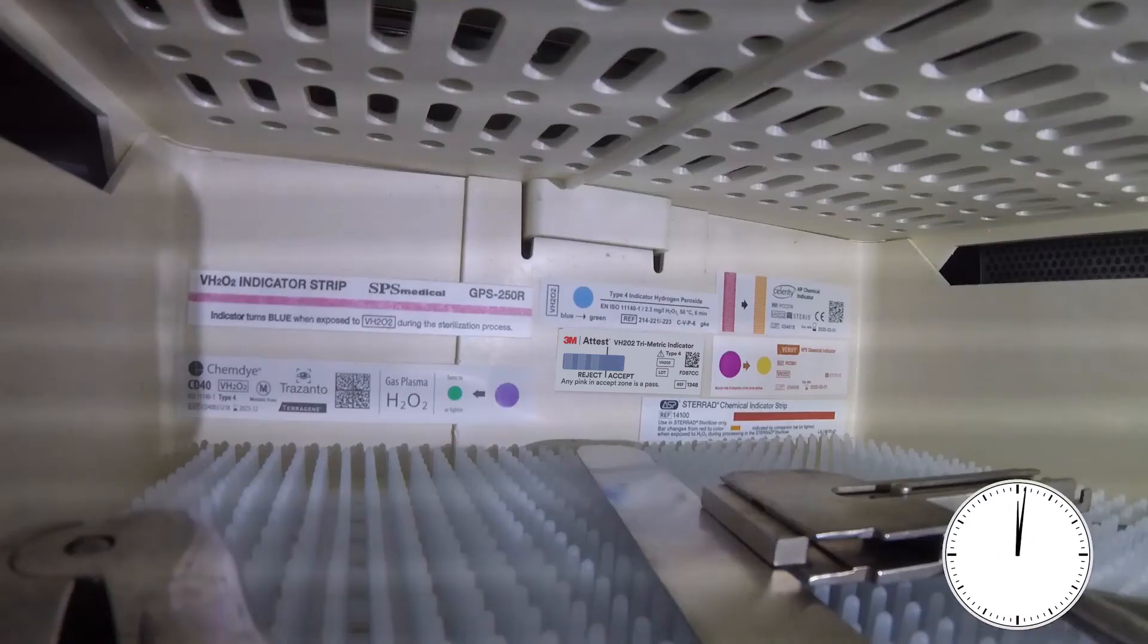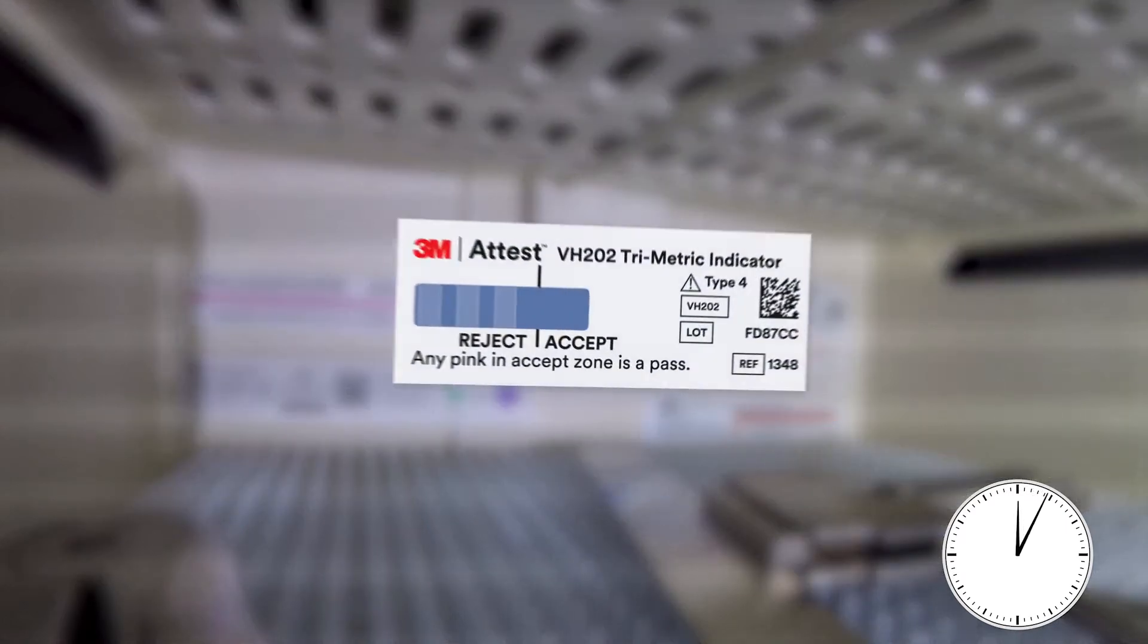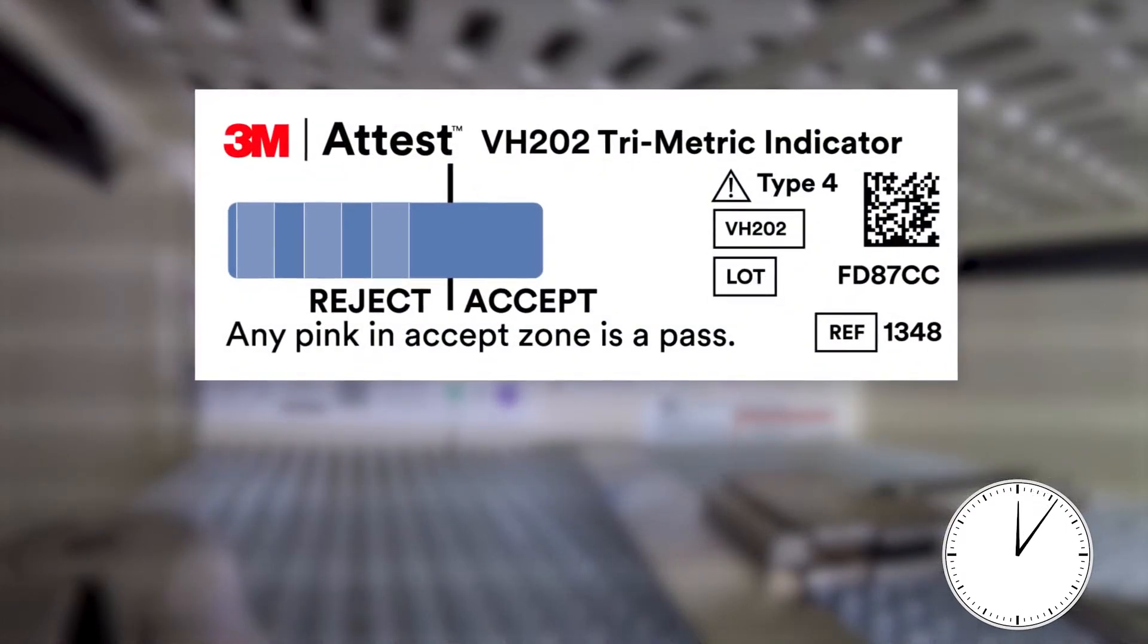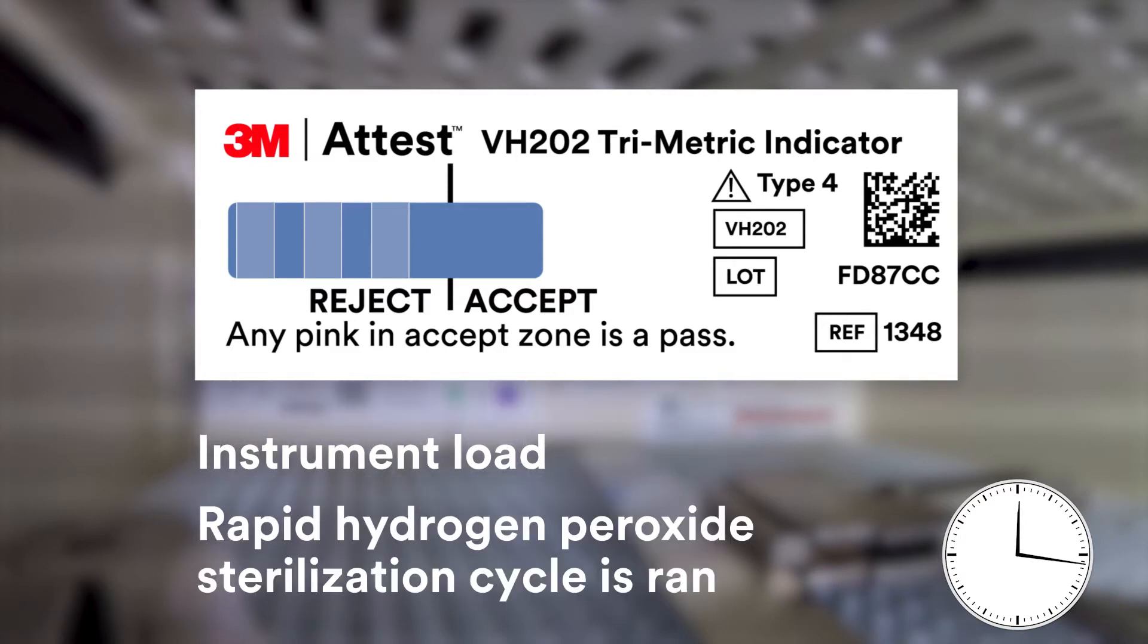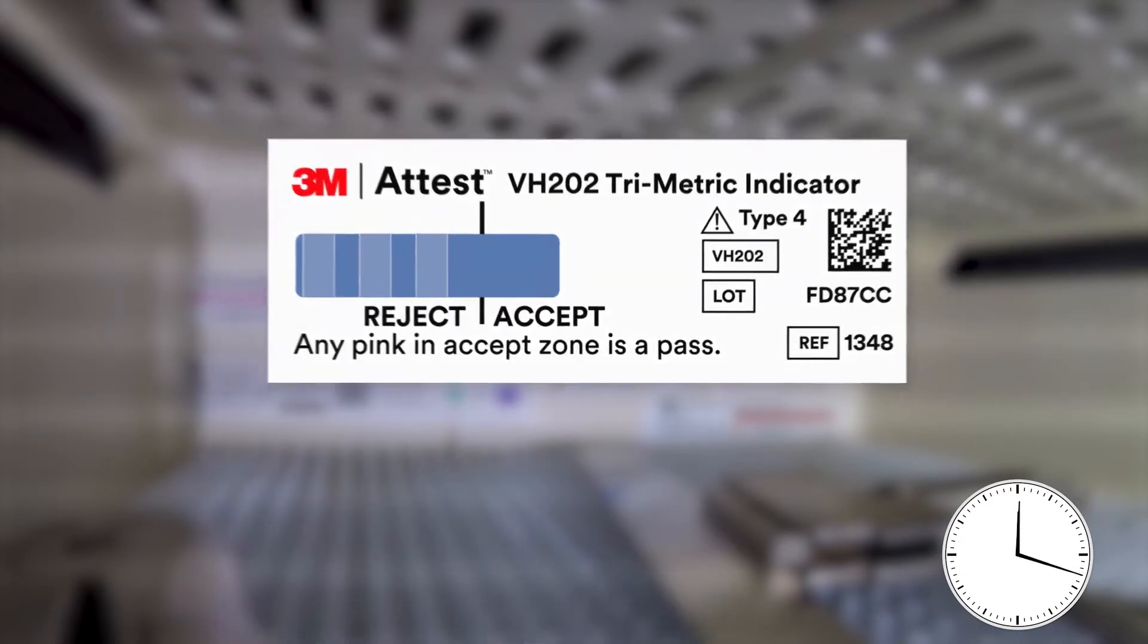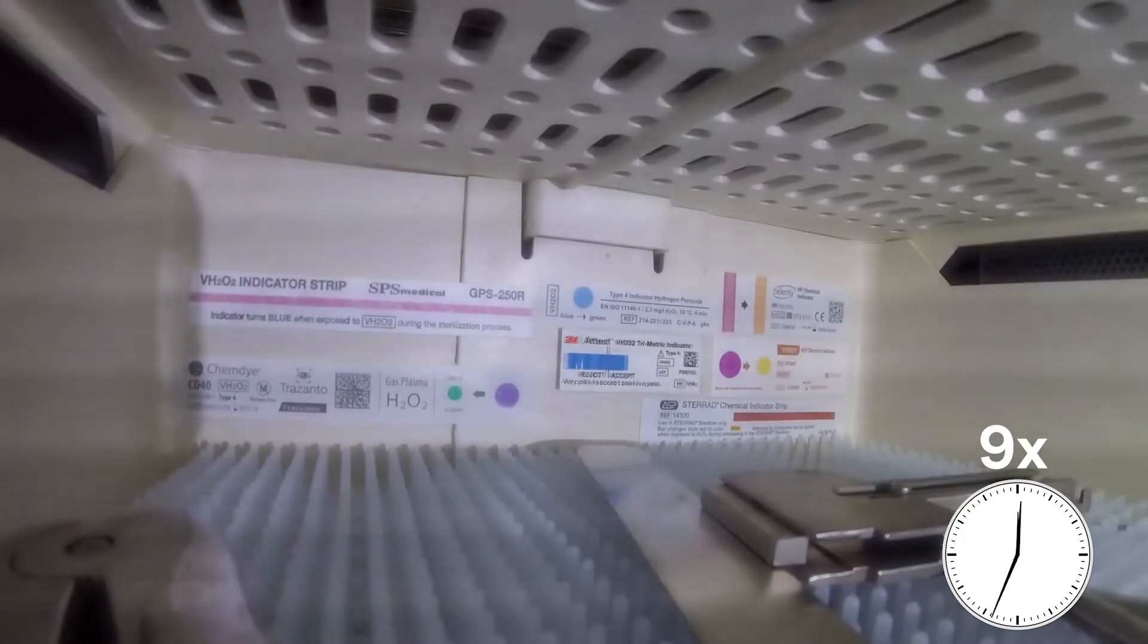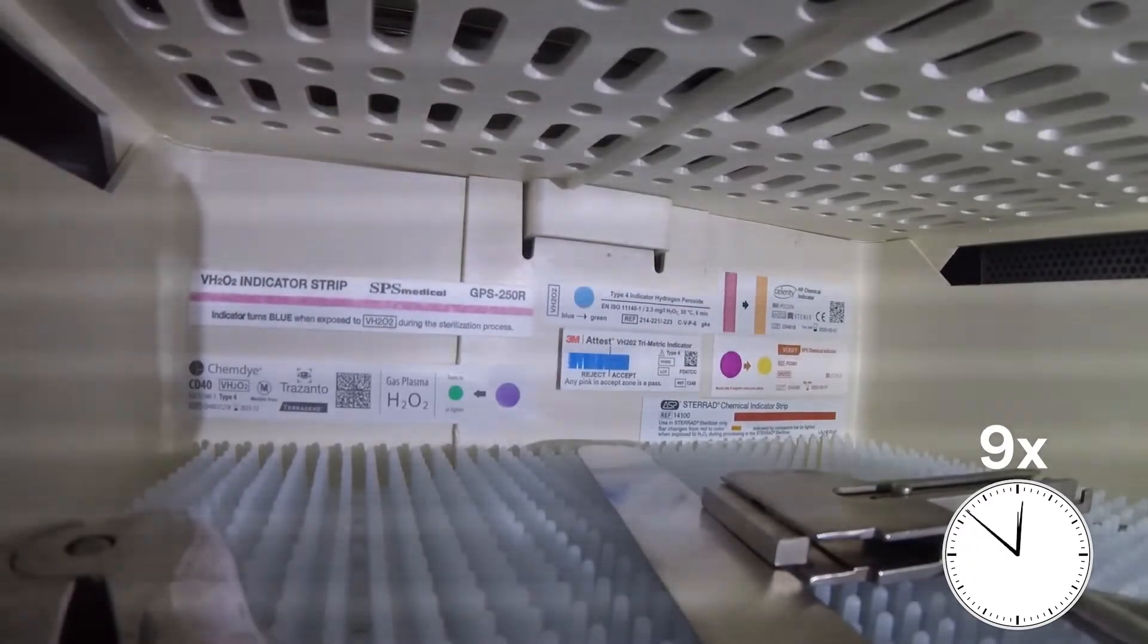We have placed several vaporized hydrogen peroxide CIs along with the 3M ATEST trimetric 1348 Type 4 CI inside a vaporized hydrogen peroxide compatible tray. We added an instrument load and a camera positioned to record the CI color change during the sterilization cycle and ran a commonly used rapid hydrogen peroxide cycle. The rapid cycle begins with a deep vacuum to remove air from the chamber and load.